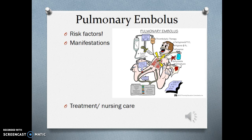Once we're finished with cardiovascular disease — which is a huge exemplar — we're going to talk about pulmonary embolus. This lays the groundwork for when we do mobility and talk about fat embolus, which is a type of pulmonary embolus. Key considerations include risk factors for pulmonary embolus, its manifestations, treatment, and nursing care.